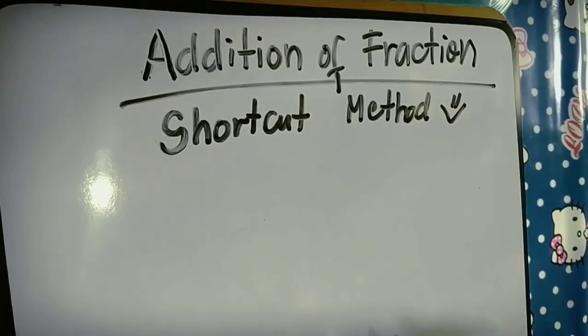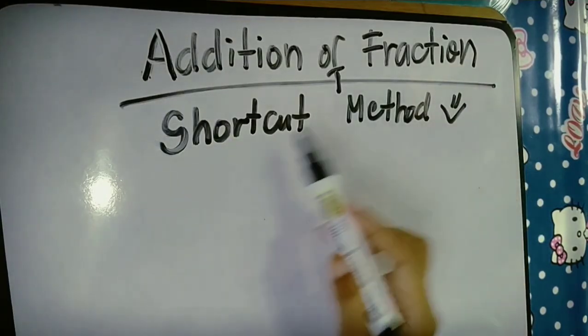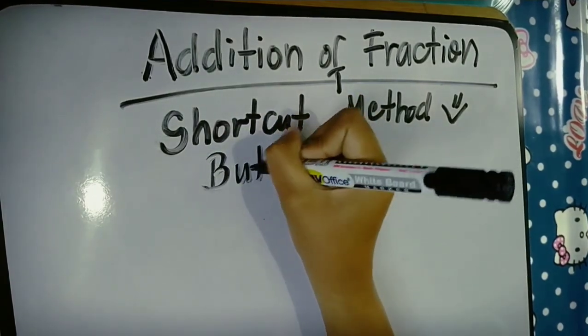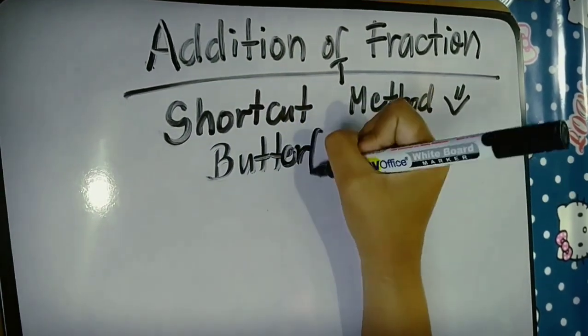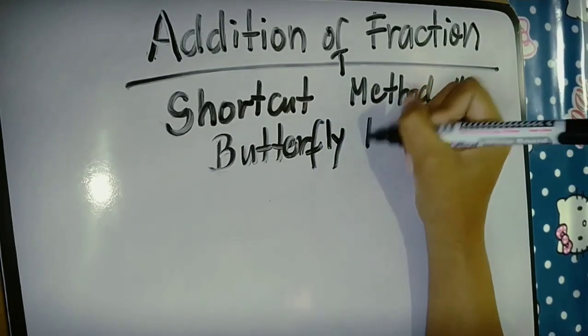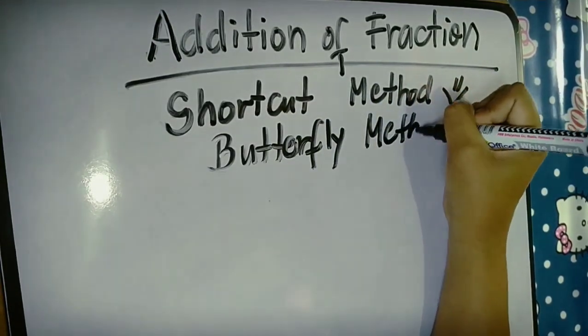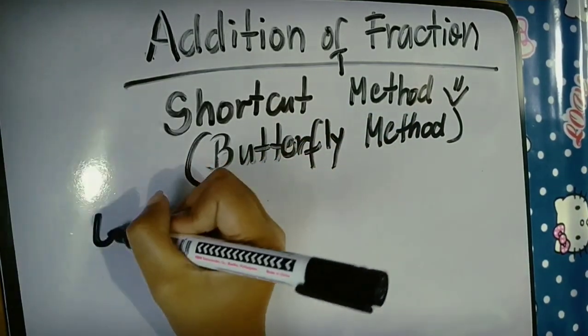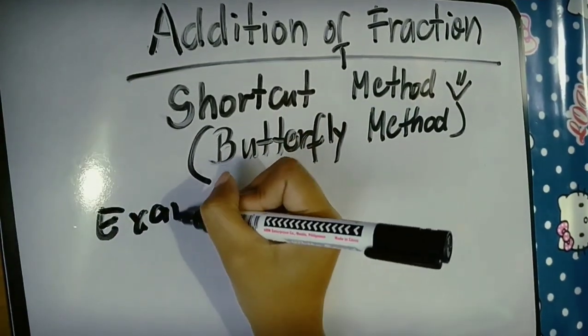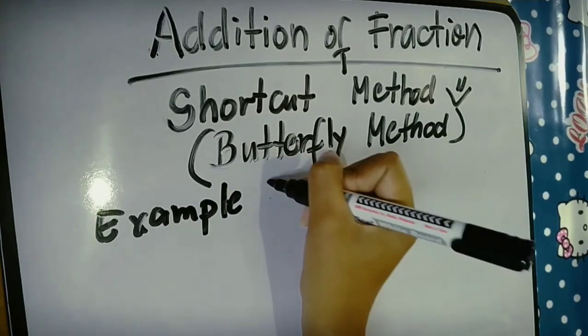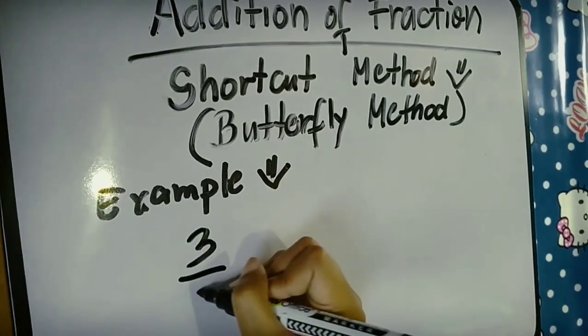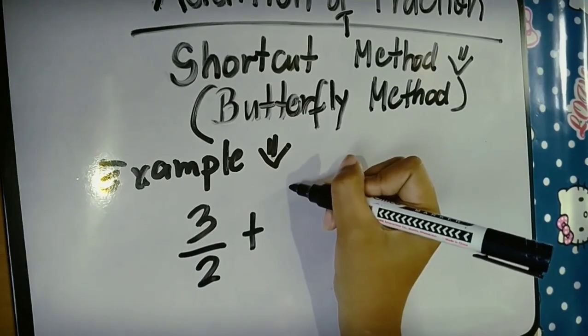Now we will discuss the shortcut method, also known as the butterfly method. Let's have an example, same given as the long method. 3 halves plus 1 third.